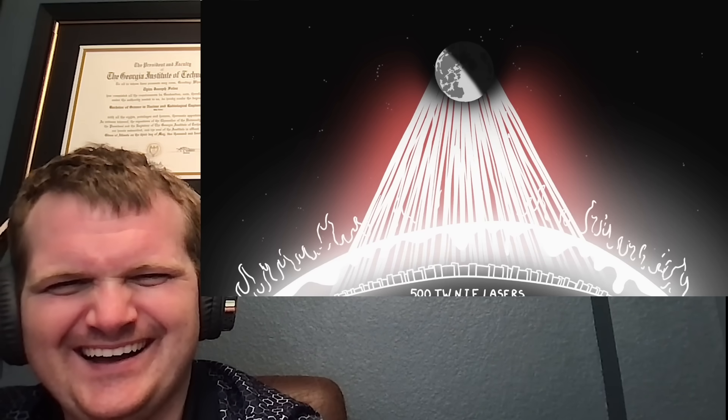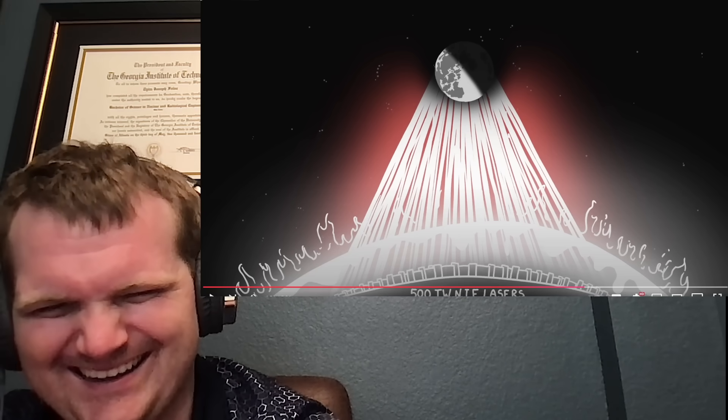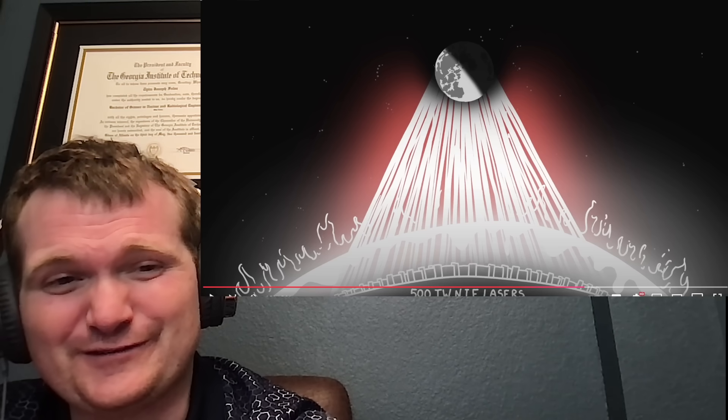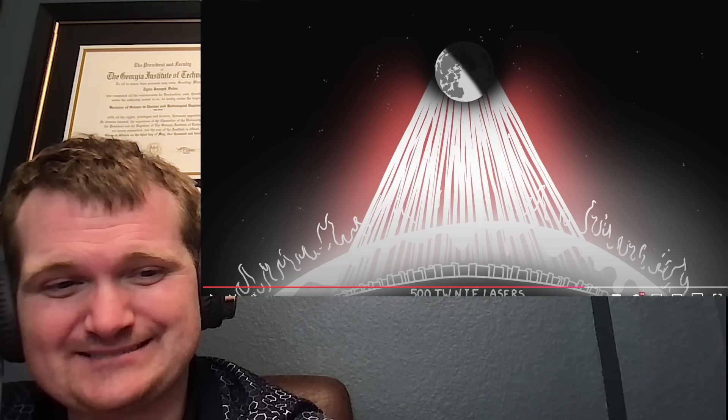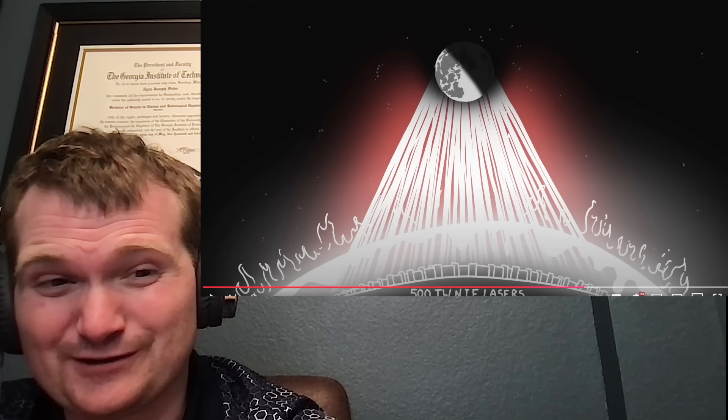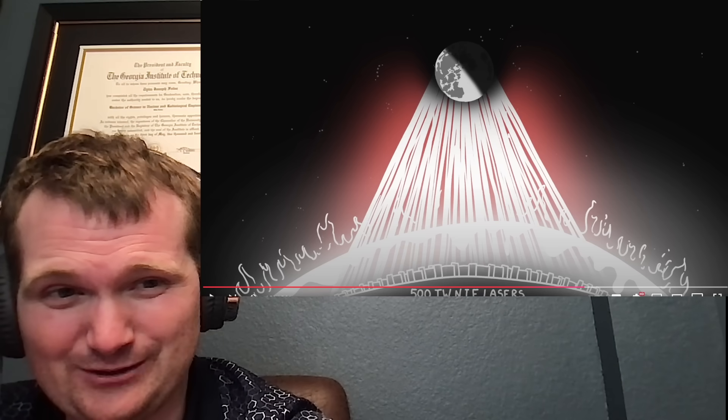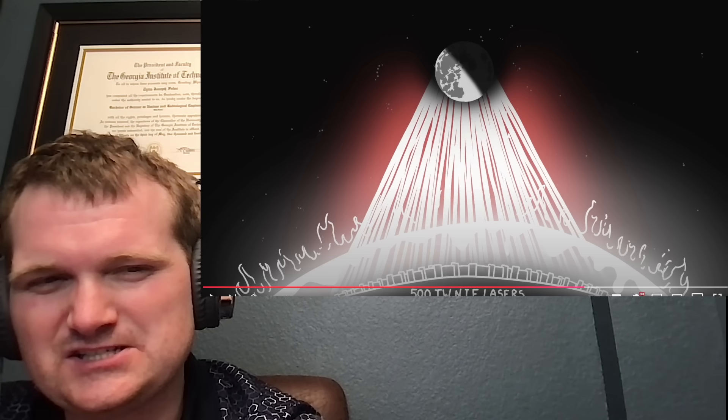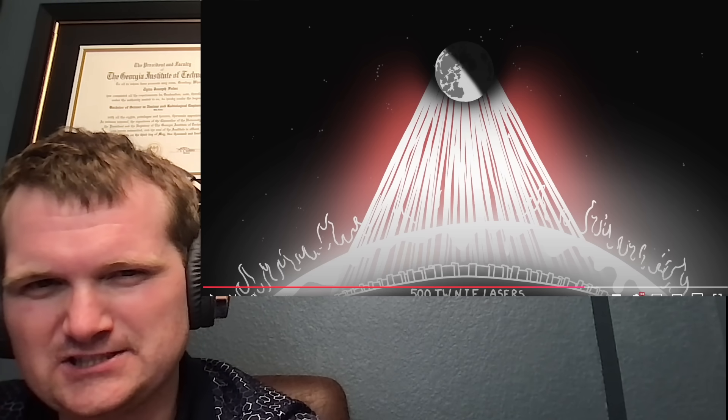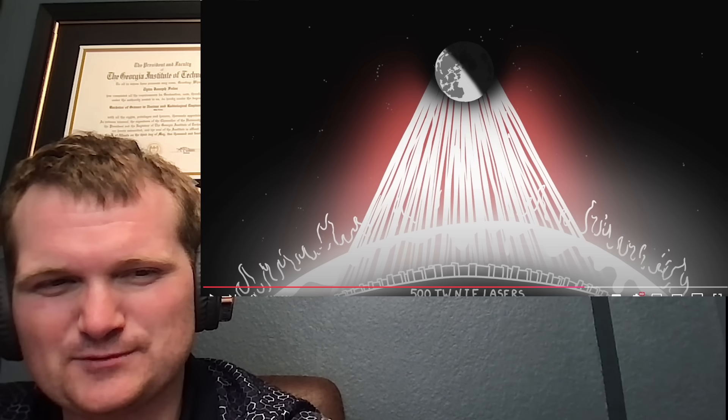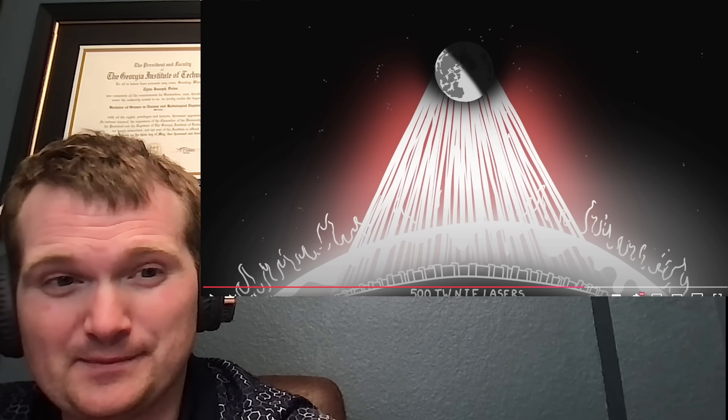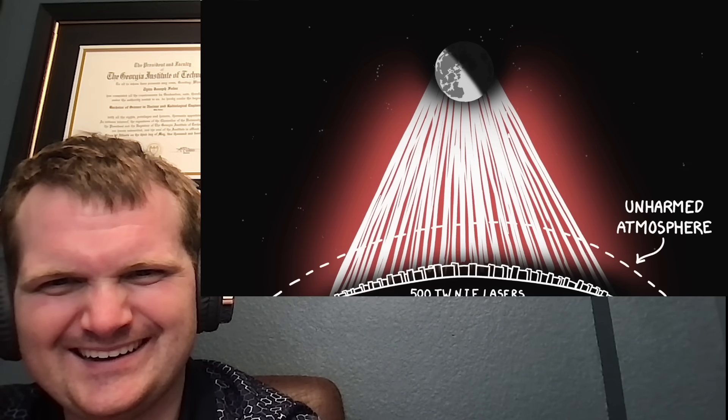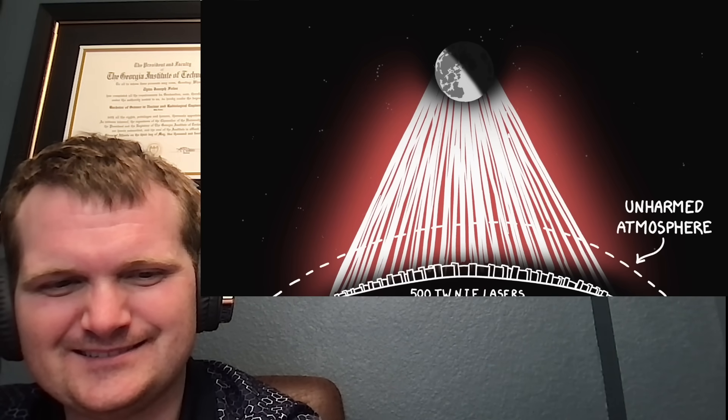Unfortunately, the lasers turn the atmosphere to plasma. So 500 terawatts times—we're covering the surface of the Earth at this point, times a lot more than 8 billion. And they were people that looked into the first atomic bomb detonation potentially doing this. We're dealing with way more power over a much wider area at this point. The lasers turn the atmosphere to plasma and kill us all on the Earth's surface.